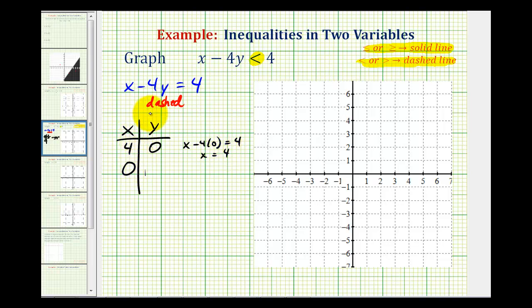And if x is equal to zero we would have zero minus four y equals four or just negative four y equals four. So we divide by negative four and we have y equals negative one.